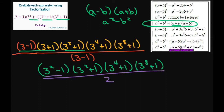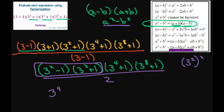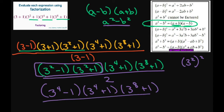Now we can use the same formula for this one. Your a is 3 squared and your b is 1. So this is going to be 3 to the power of 4, because squaring 3 squared gives 3 to the 4th, and squaring 1 gives 1. So it's 3 to the power of 4 minus 1, times 3 to the power of 4 plus 1 times 3 to the power of 8 plus 1, all divided by 2.